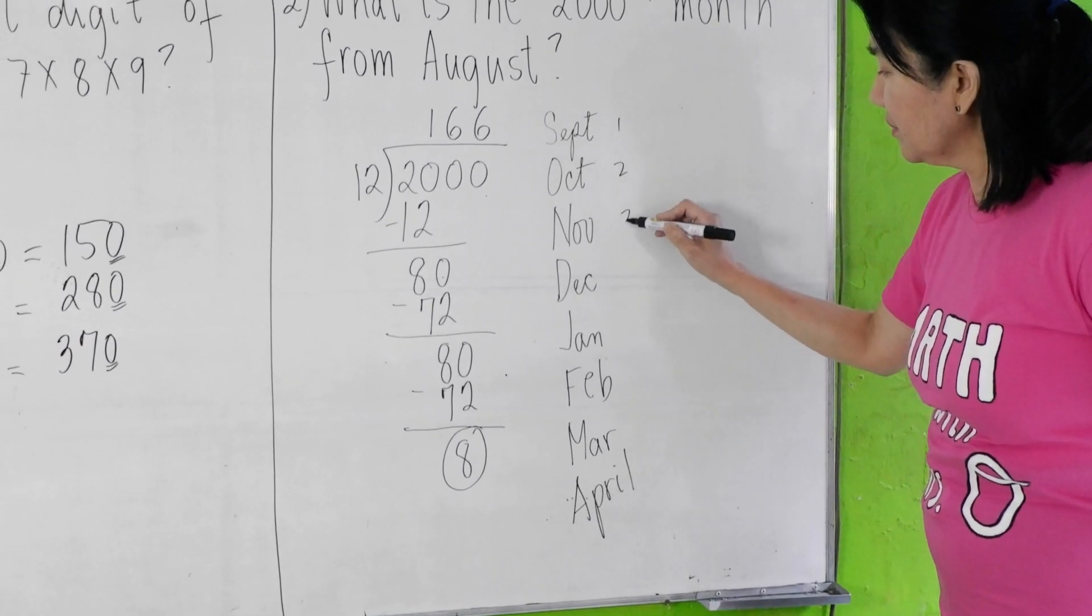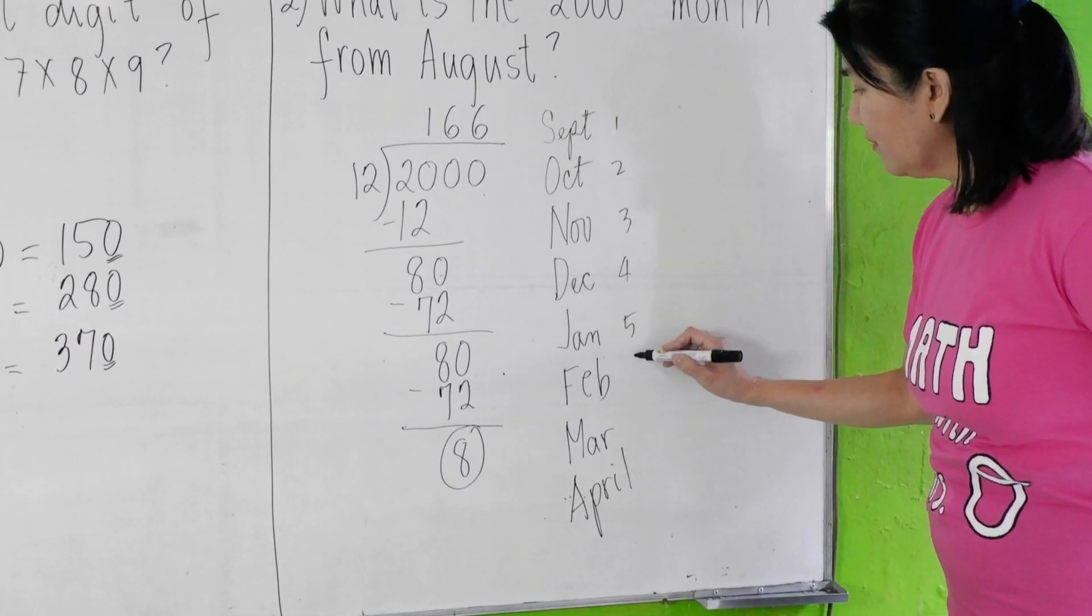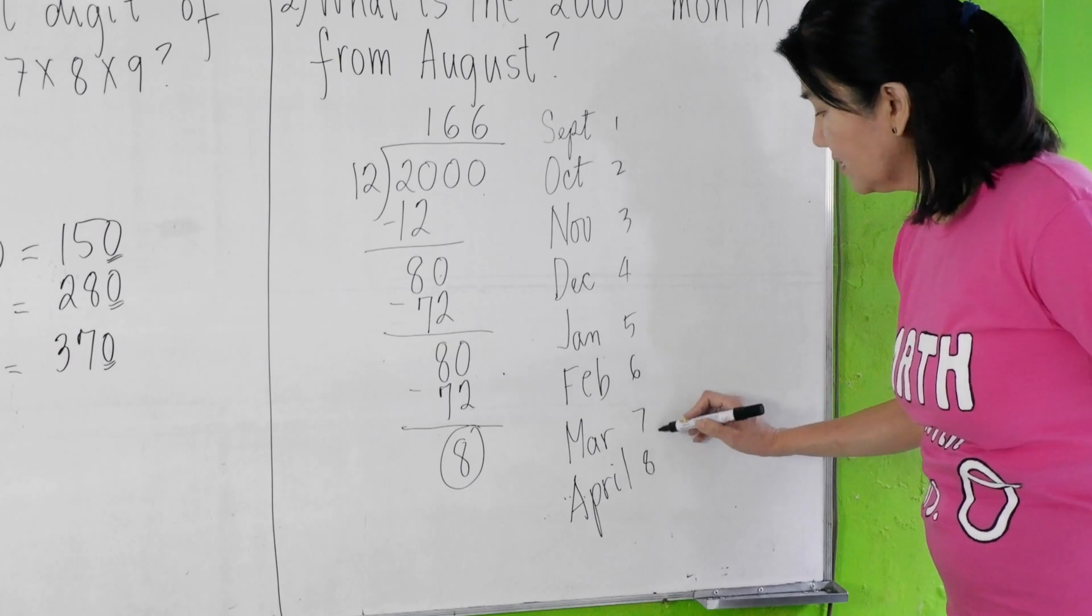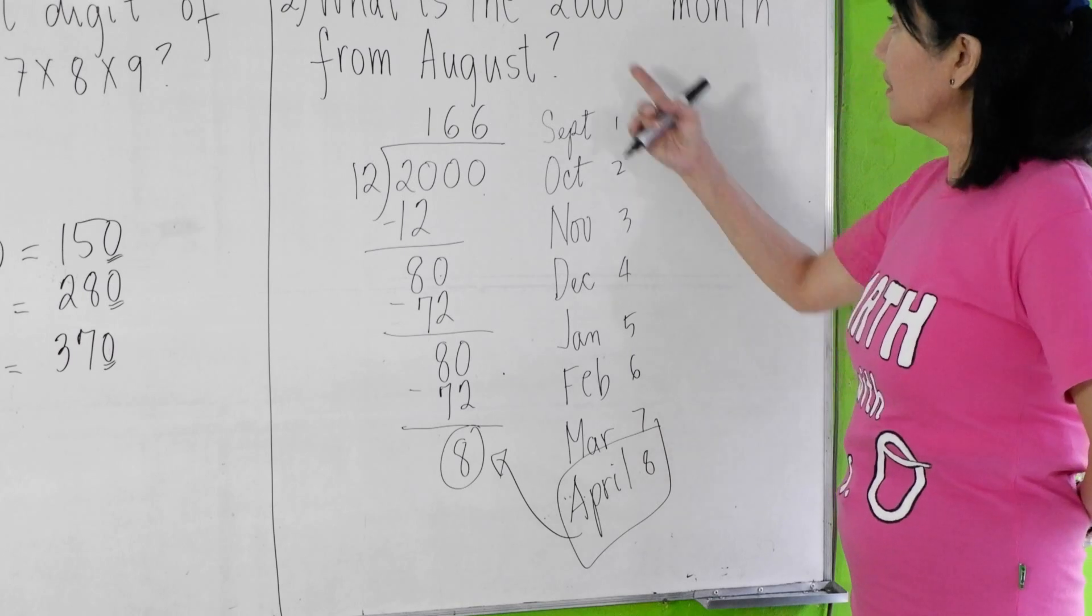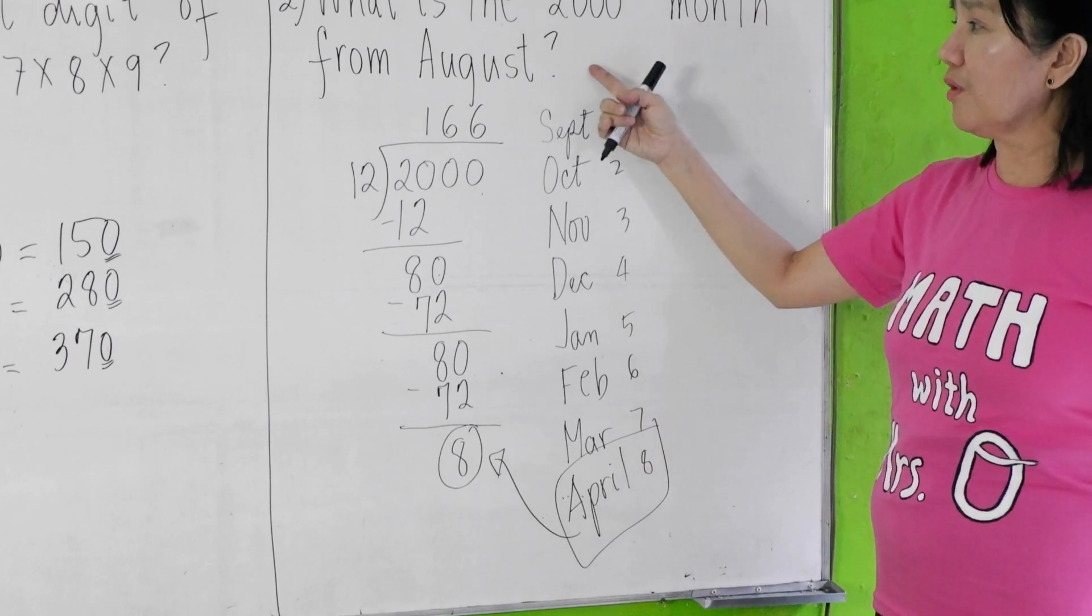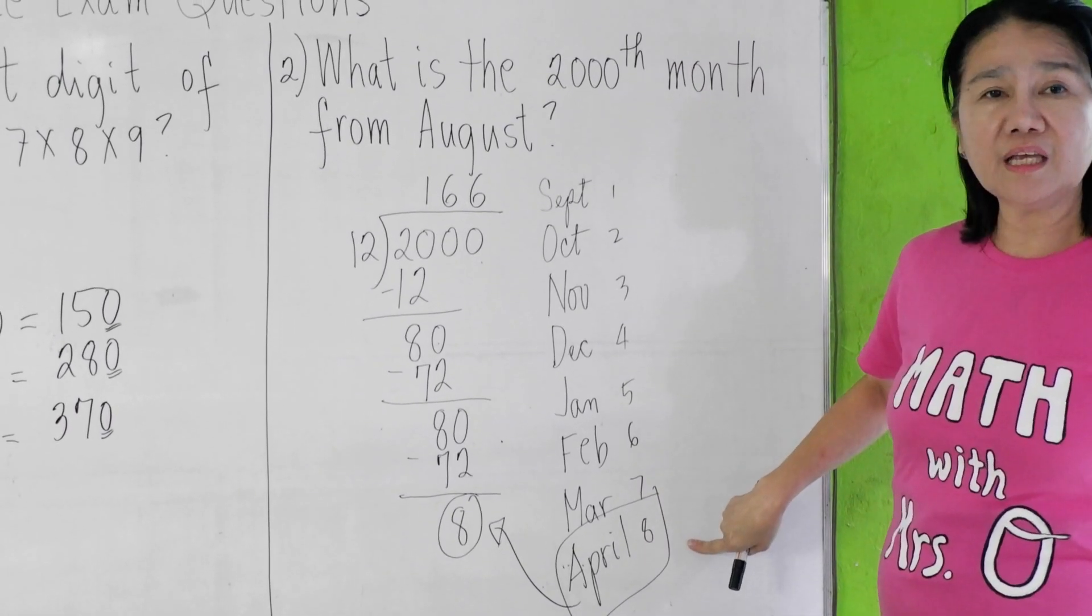This is 1, 2, 3, 4, 5, 6, 7, 8. The remainder is 8. So the 2000th month from August is April.